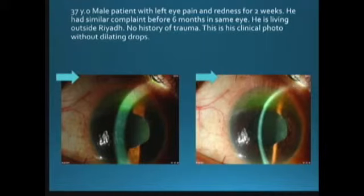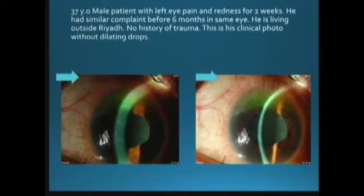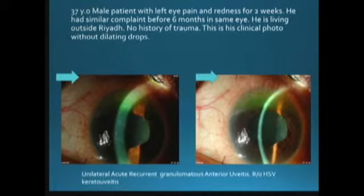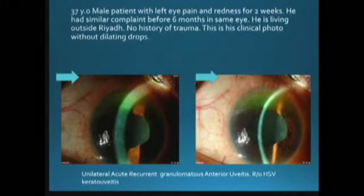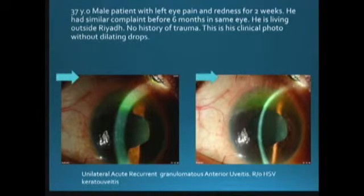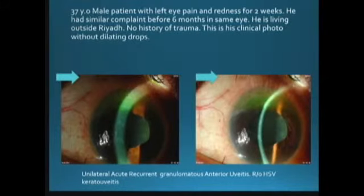Further characterization: this is unilateral, acute, recurrent granulomatous anterior uveitis — rule out herpetic keratouveitis. The iris atrophy supports recurrence, as it usually does not present in the first attack. Every word in the working diagnosis indicates something. Whenever you consult a colleague with this information, it means you have done all the assessment and ruled out other things.